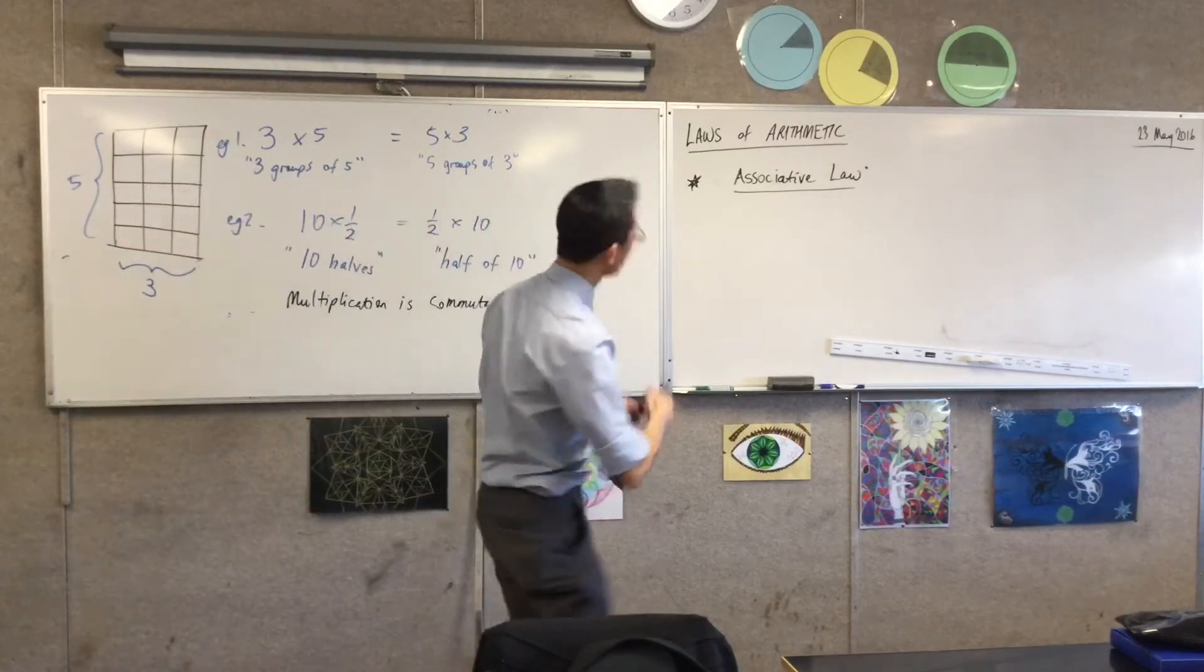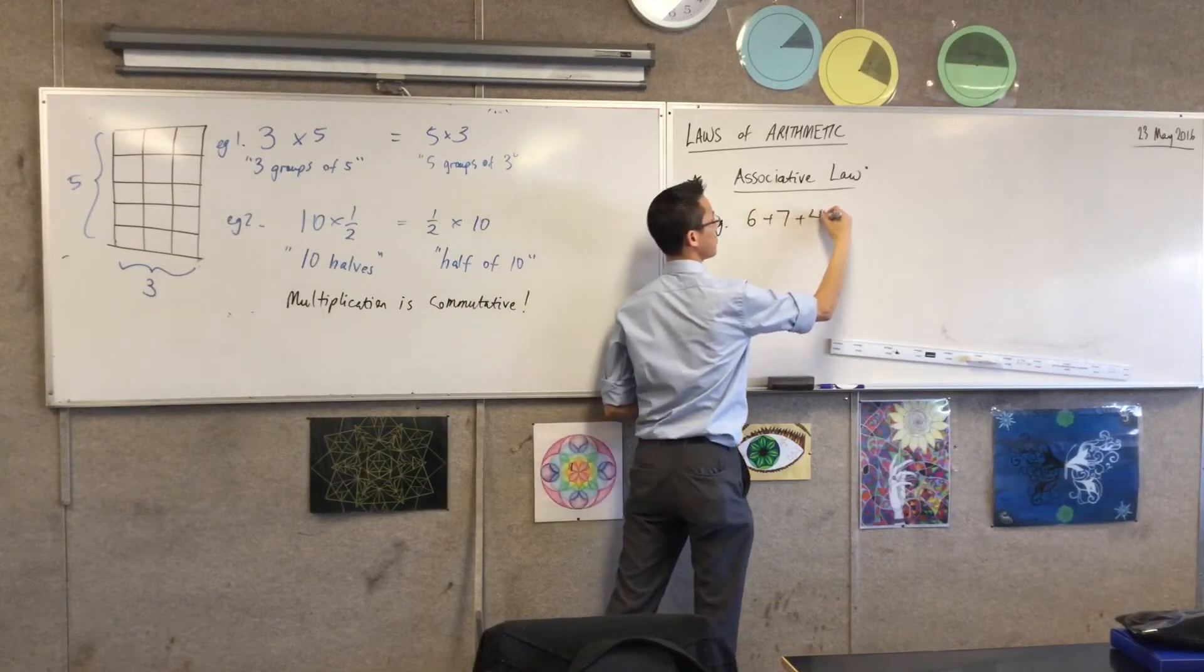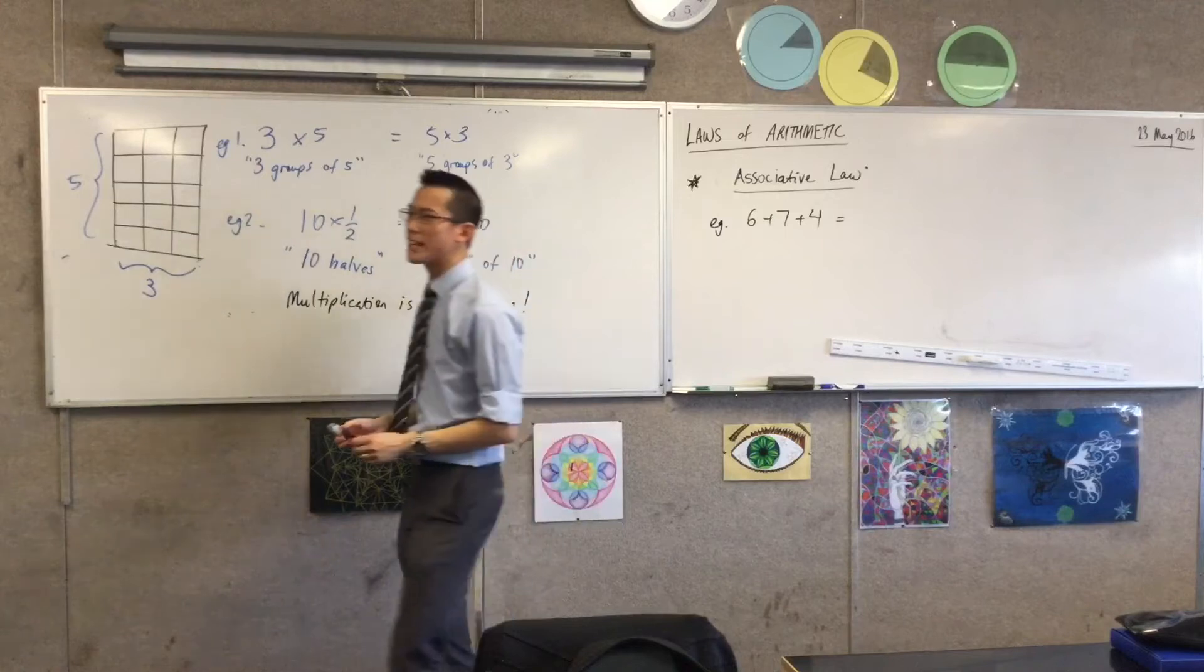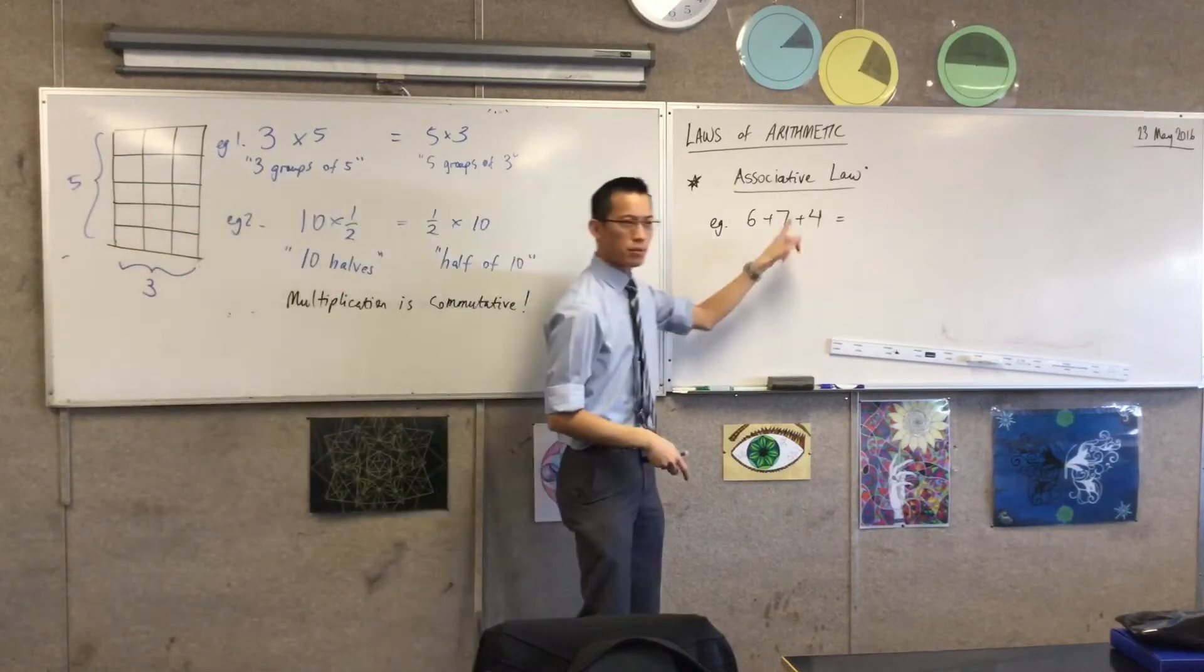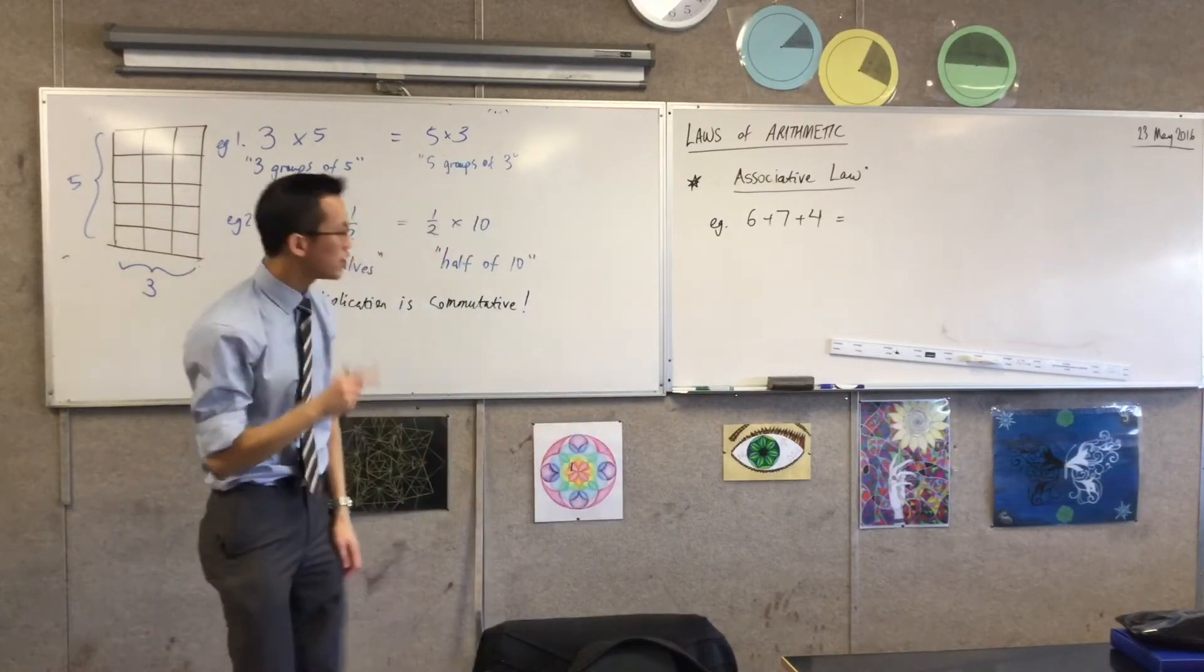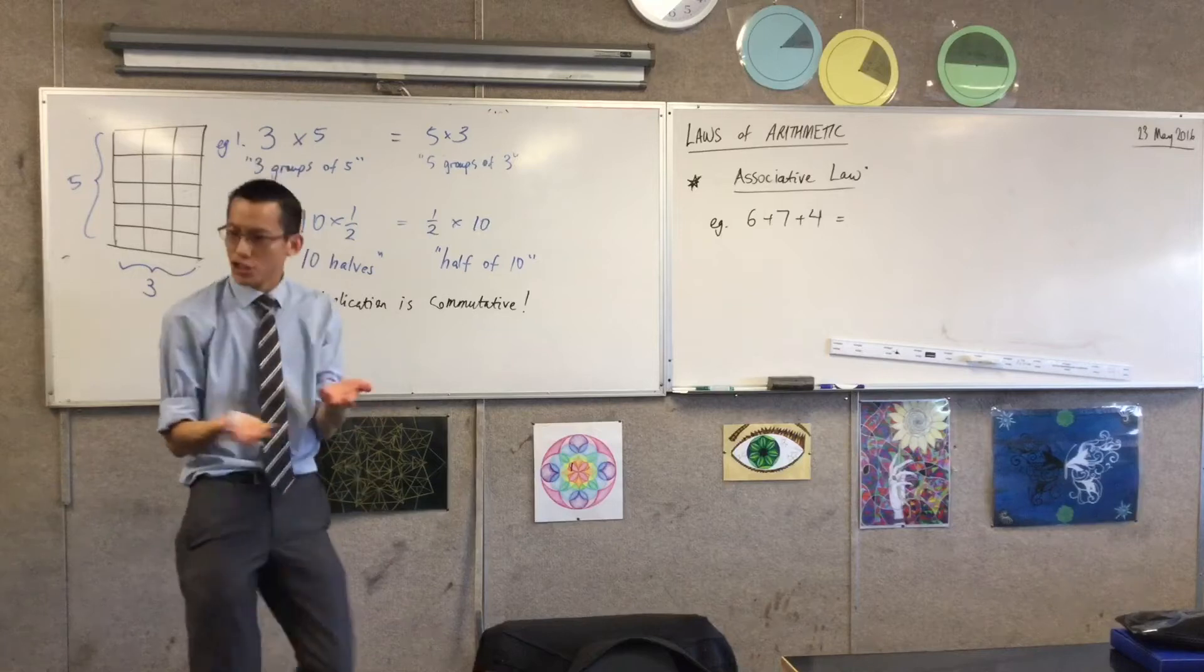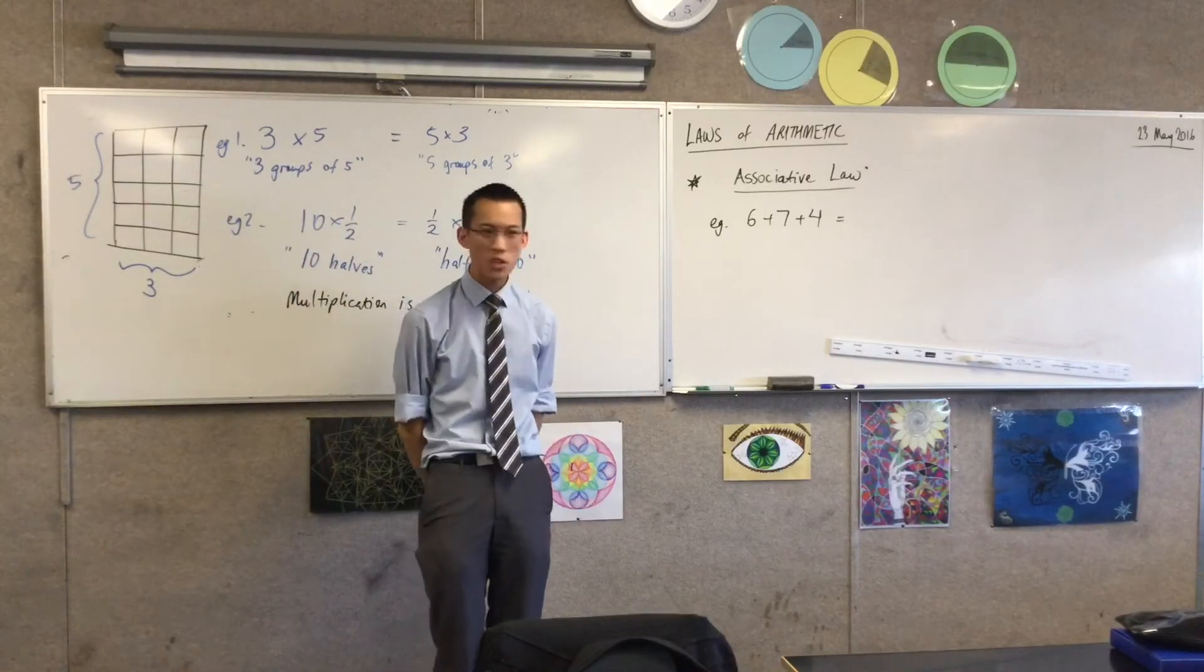So, for example, here's an example I've got. This is something we looked at right at the end of last term under order of operations. Okay? Six plus seven plus four. Addition is associative. So I can actually say, do you do six plus seven first? Or you do seven plus four first? Which one do I do first?